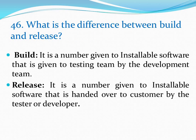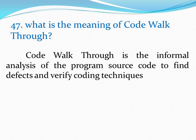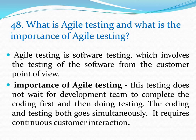What is the difference between build and release? Build is a number given to installable software that is given to the testing team by the development team. Release is a number given to installable software that is handed over to the customer by the tester. What is code walkthrough? Code walkthrough is the informal analysis of the program source code to find defects and verify coding techniques. What is agile testing? Agile testing is software testing that involves testing the software from the customer's point of view. It does not wait for the development team to complete coding first; coding and testing go simultaneously, and it requires continuous customer interaction.